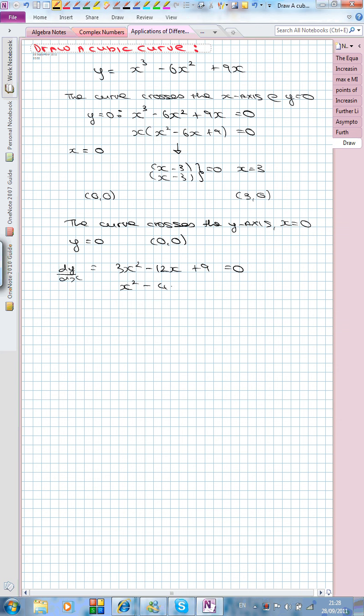I'm going to divide across by 3 to make my factorization quicker. Let's get my factors, which will be 3 and 1. Let that equal to 0. So x is equal to 1 and x is equal to 3. From this, we can see we have two turning points.